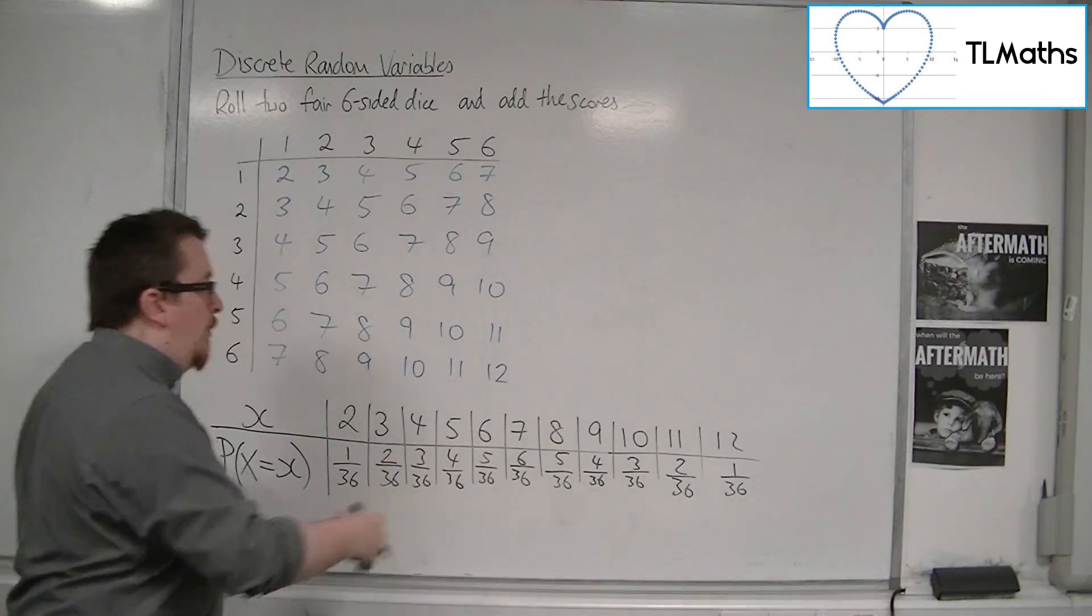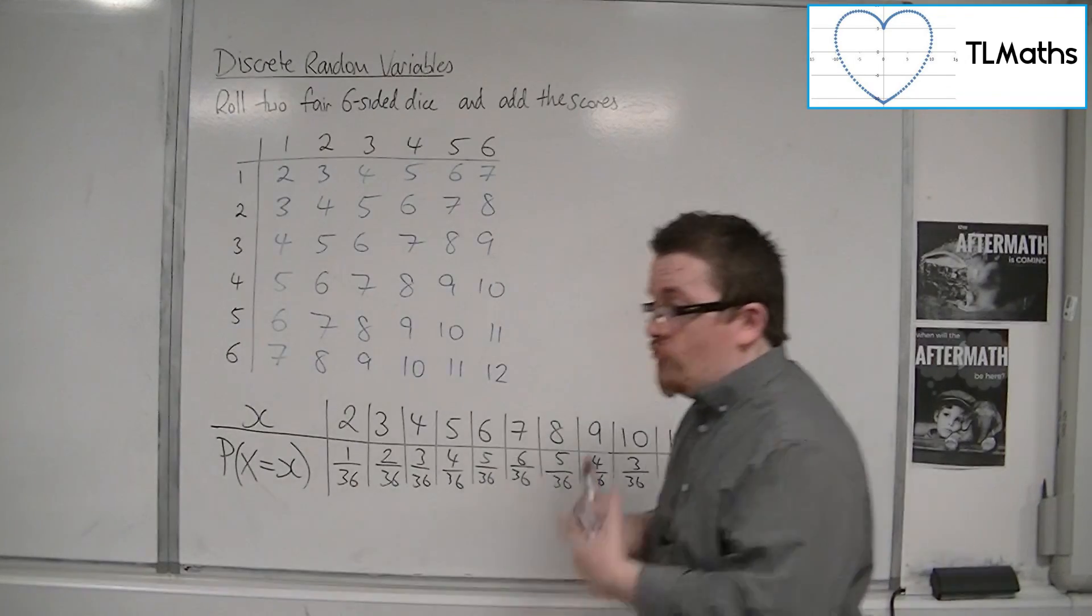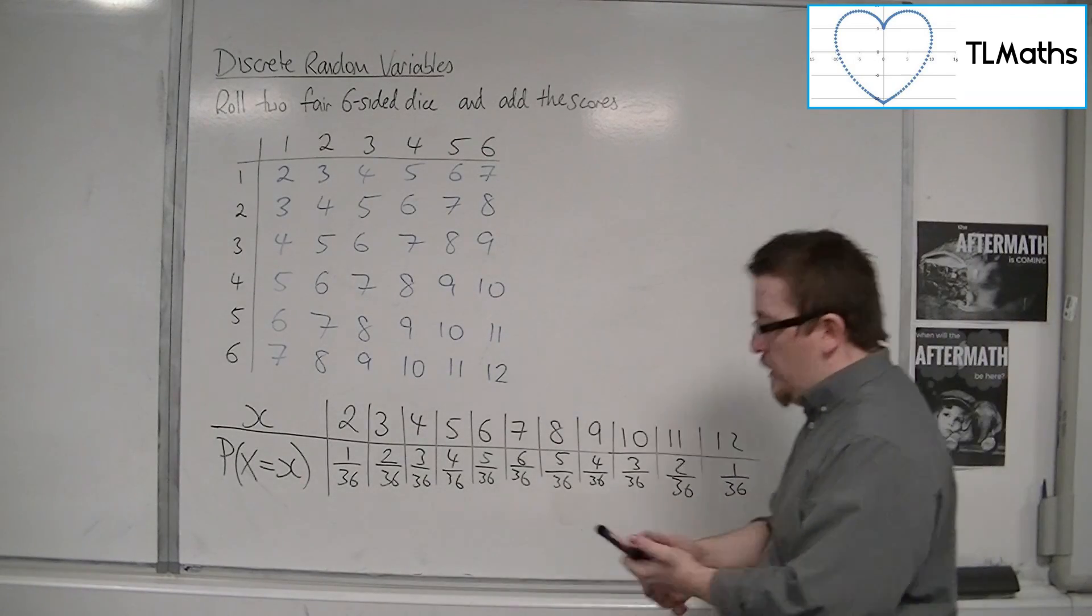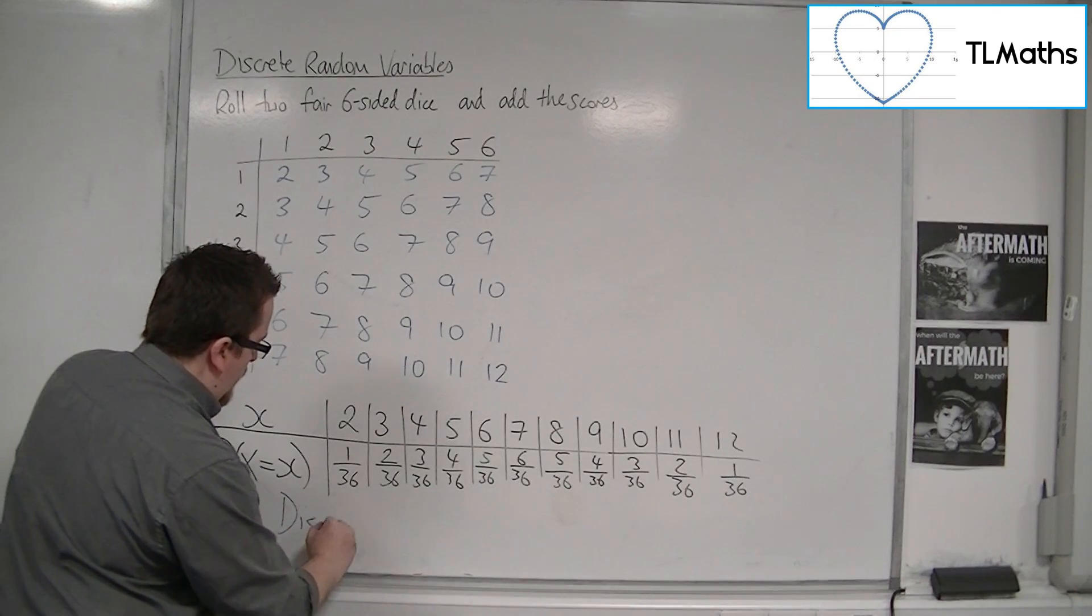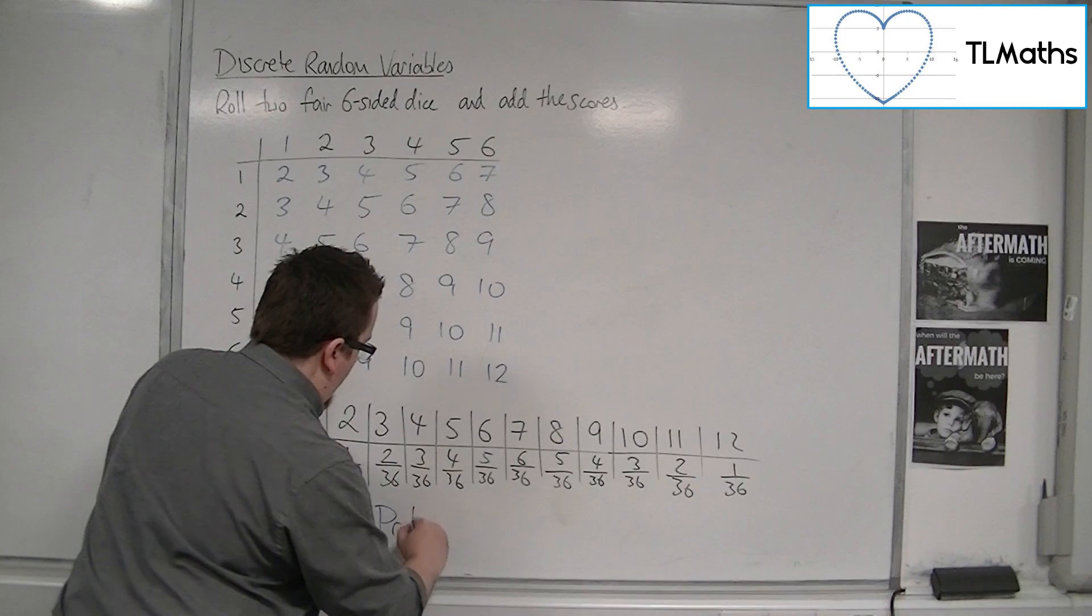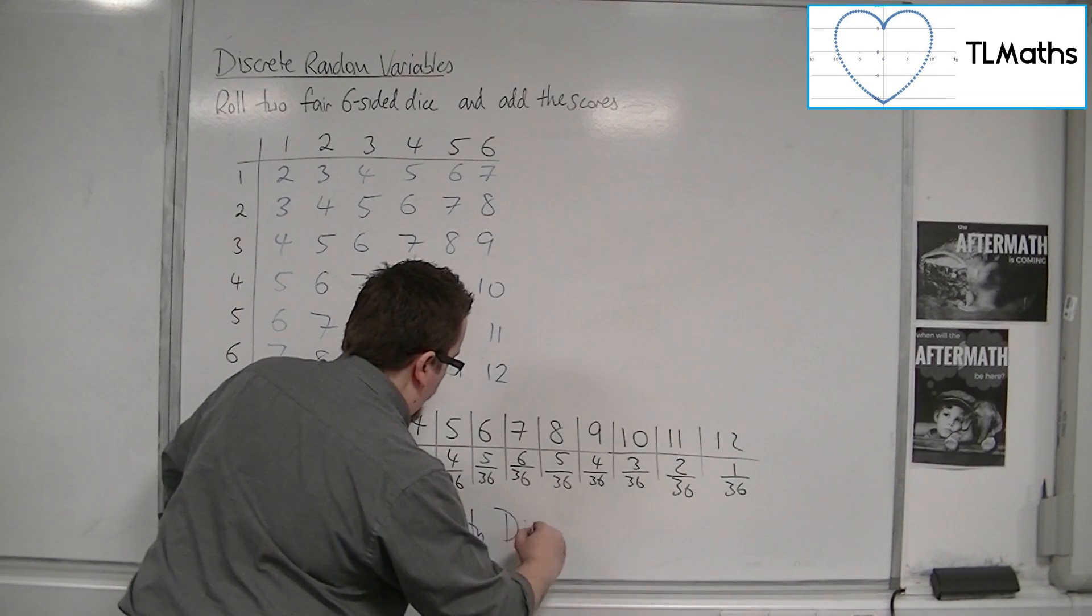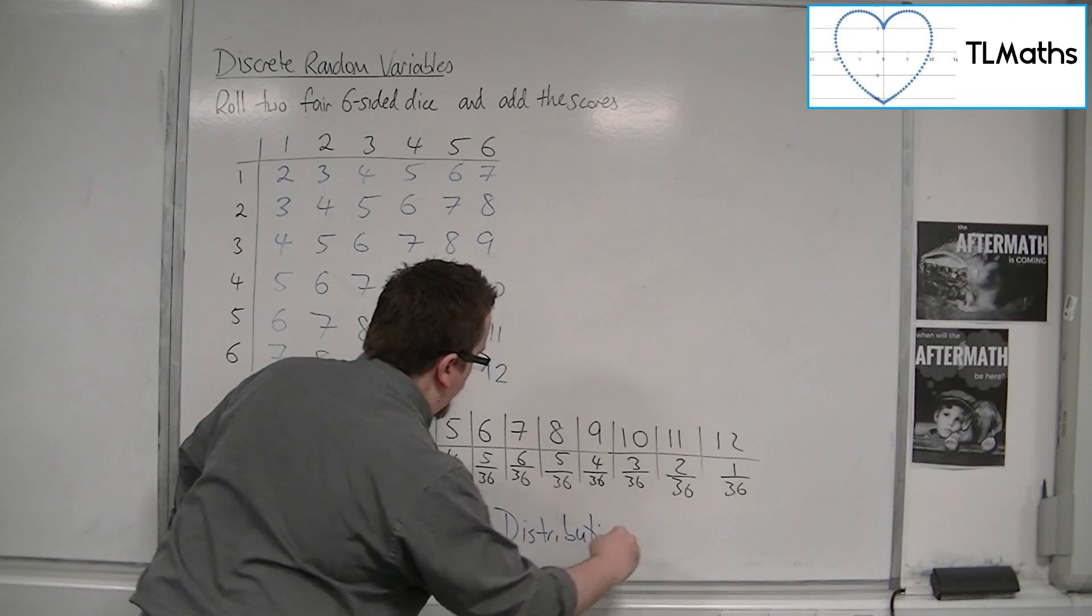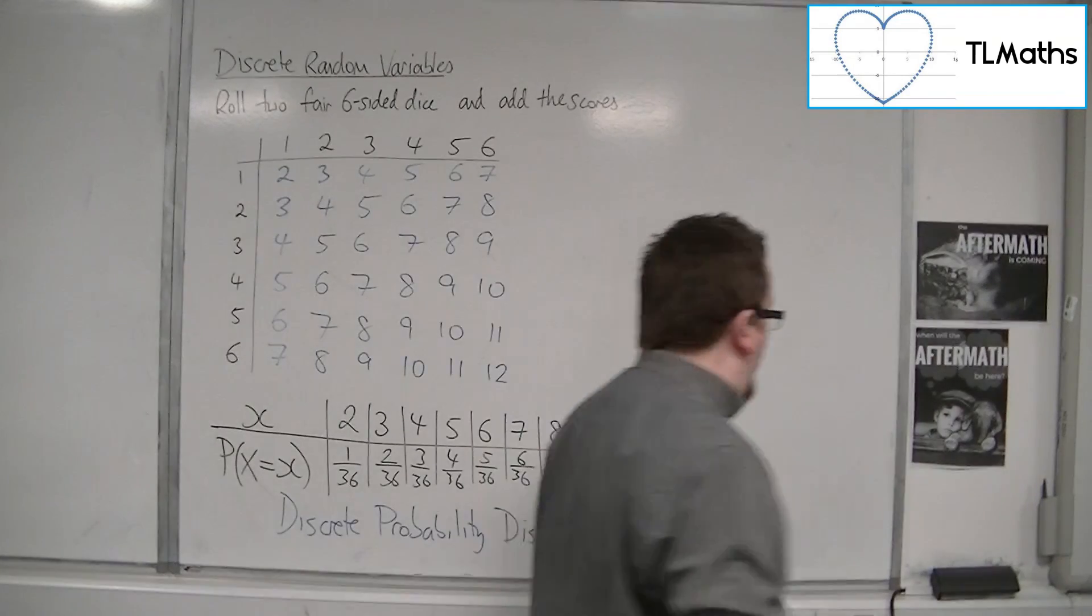This table that we have here is described as a discrete probability distribution. Now there's a couple of ways of writing down a discrete probability distribution, but this is one of those ways, in this tabular format.